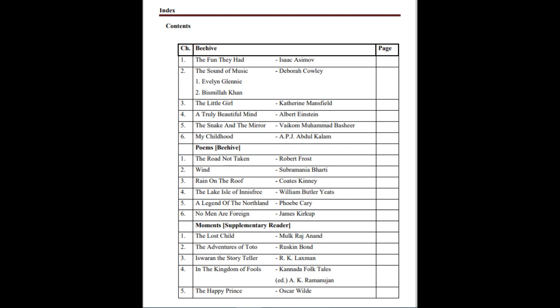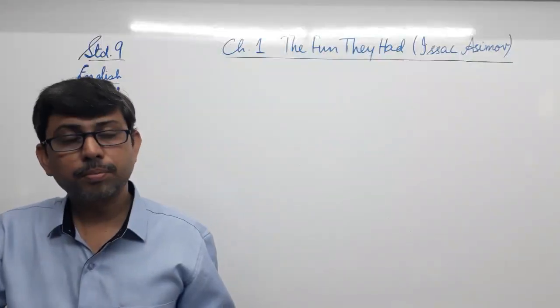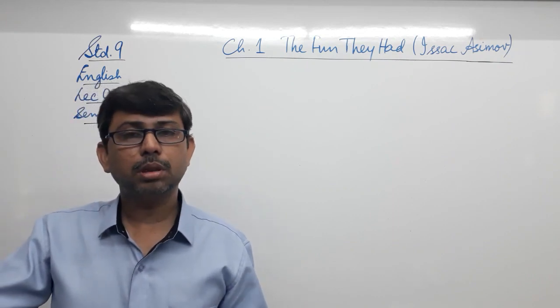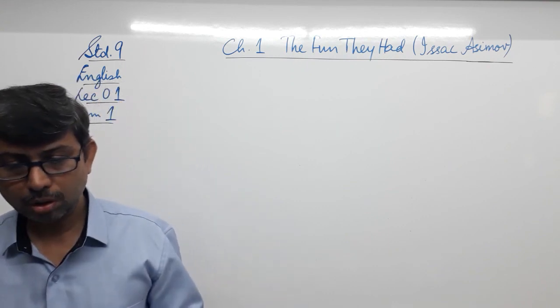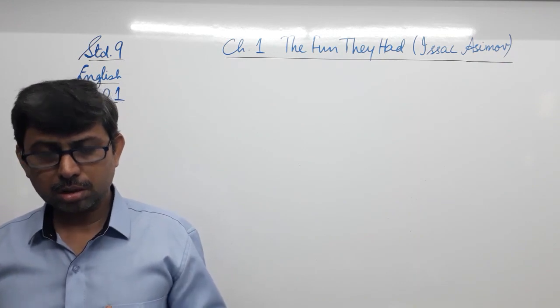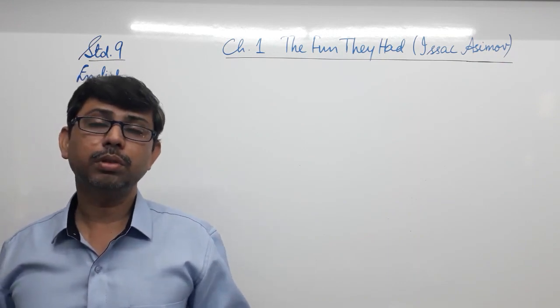I hope you understand what is a genre. A variety of types of English literature is called a genre. We have stories, we have biography, we have poems, we have lyric. Therefore, we have a variety of genres written by Indian writers, American writers, and so on. To discuss the first chapter given to us in the first unit, that is The Fun They Had written by Isaac Asimov.